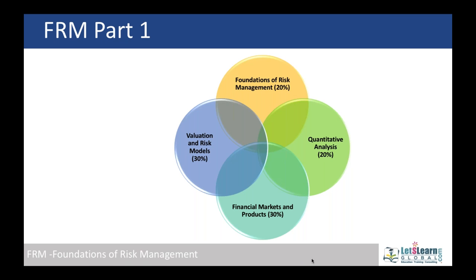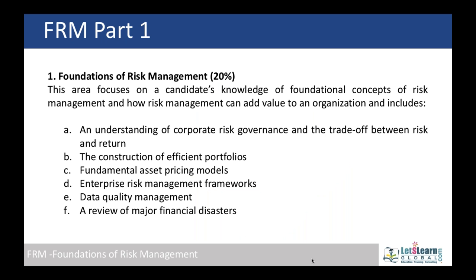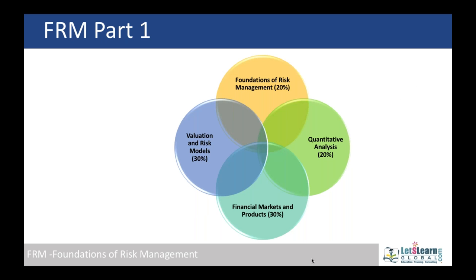FRM Part One concentrates on the foundations of financial risk management, covering 20% weightage. Quantitative analysis carries 20% weightage, valuation and risk models 30%, and financial markets and products 30%. These four areas are asked in the examination as per their respective weightages.